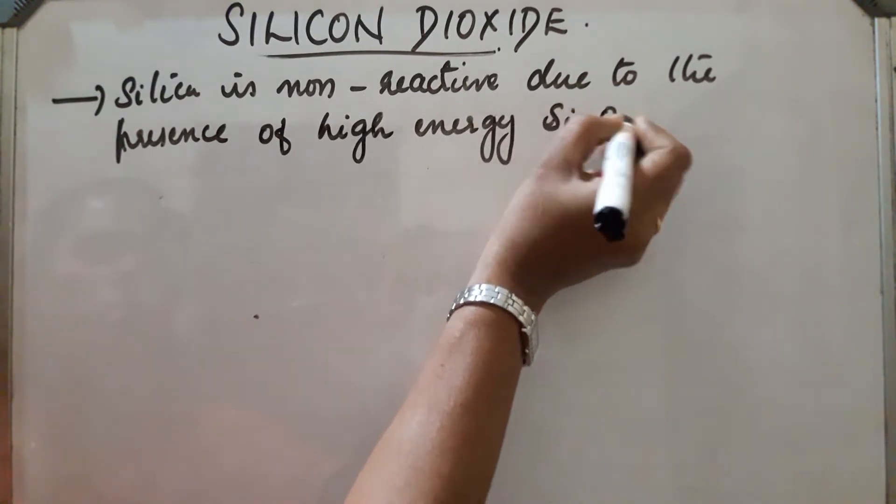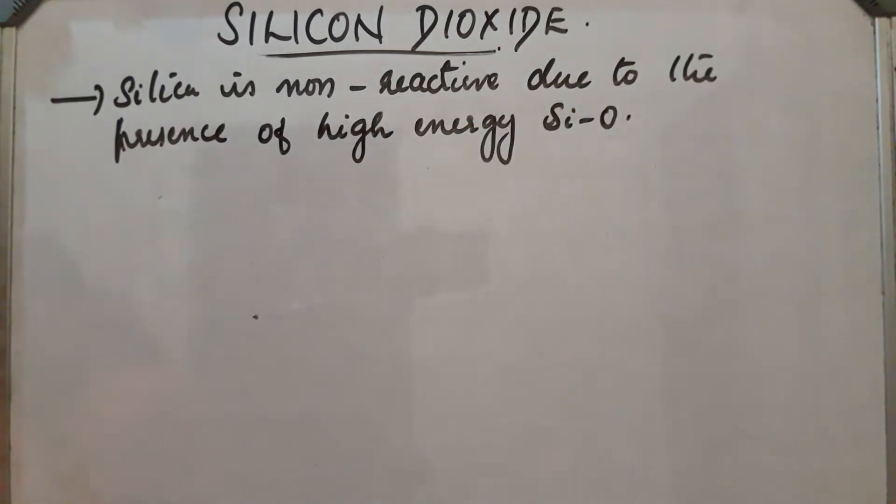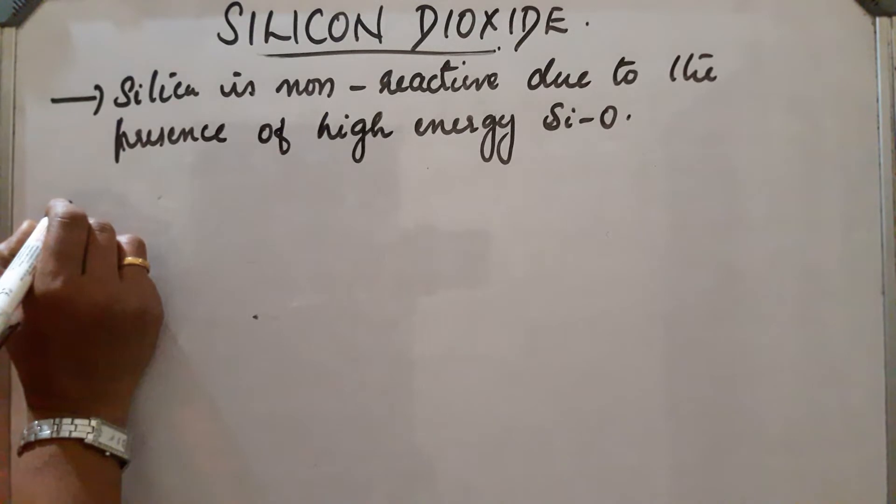High energy Si-O bond. So the Si-O bond is very strong, so high energy is required to break this bond. So it is non-reactive at normal form and it resists the attack by halogens.